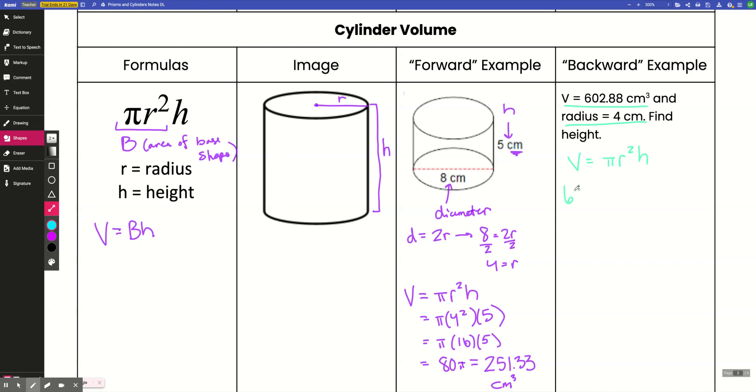I'm going to do some simplifying. So I have 602.88 equals 4 squared is 16. So this is 16 pi h. Now to get h by itself, I'm going to divide both sides by 16 pi. So it cancels both of those things out. Remember, pi is just a number. Even though it's a long, irrational, never-ending number, it is still a number.